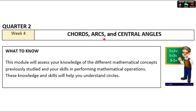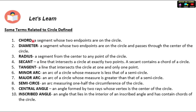For Quarter 4, the topic is about chords, arcs, and central angles — parts of a circle. Some terms: a chord is a segment whose two endpoints are on the circle. A diameter is a segment whose two endpoints are on the circle and passes through the center. A radius is a segment from the center to any point on the circle. A secant line intersects the circle at exactly two points. A tangent line intersects at exactly one point. A minor arc is an arc whose measure is less than a semicircle. A major arc is greater than a semicircle. A semicircle is one half of the circle. A central angle is an angle formed by two rays whose vertex is at the center.